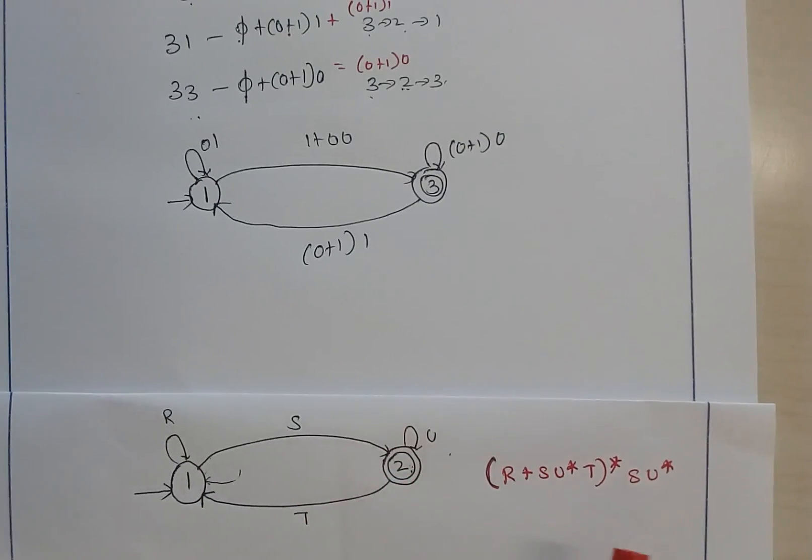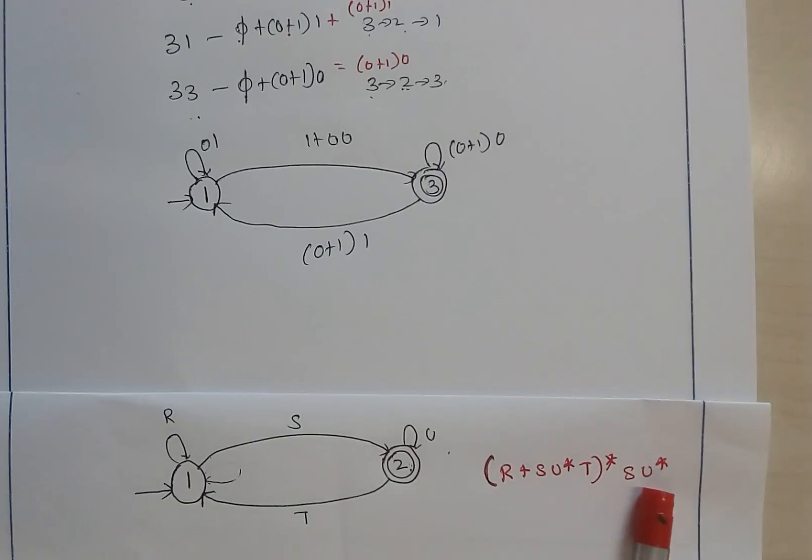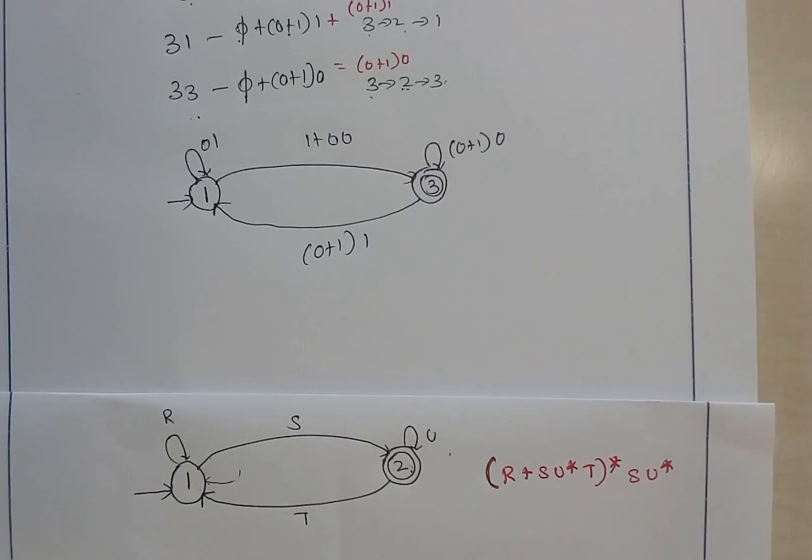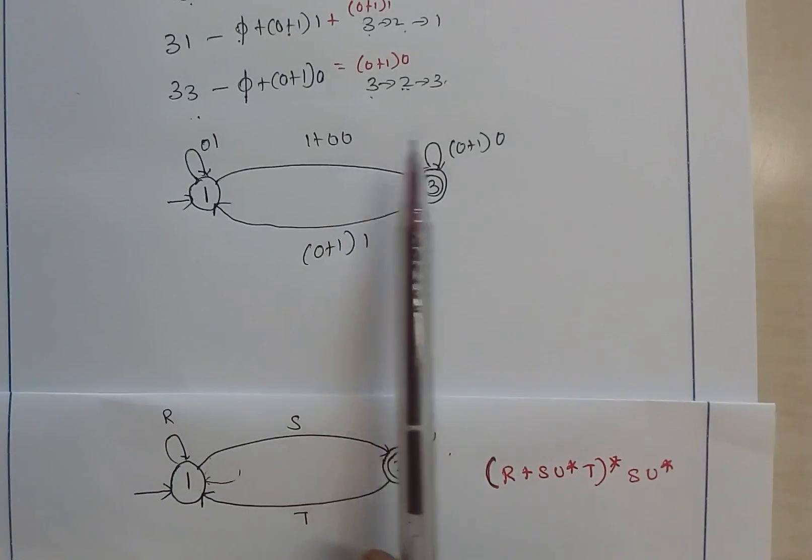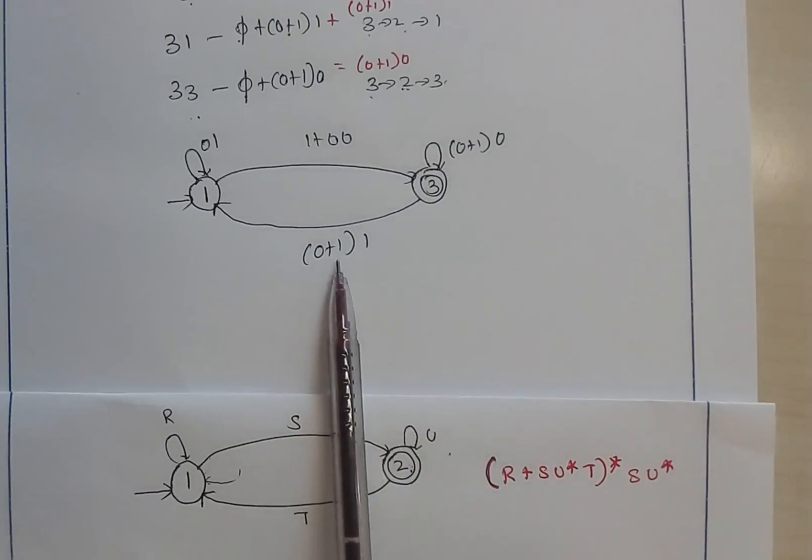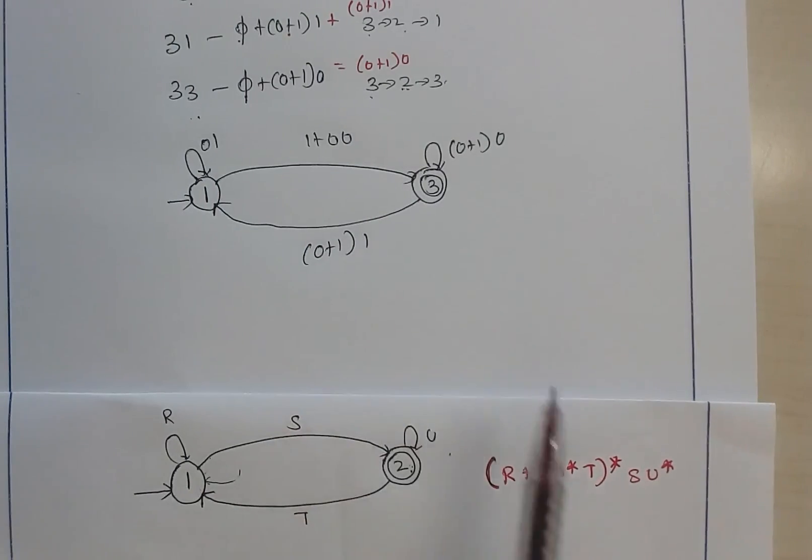Whenever you have this structure, we are going to use this as a formula and update it. In the given example, you have a loop over here, so this input will be considered as r, and this as s, and this as u, and this as t. When you apply that in the formula, you get the final regular expression.